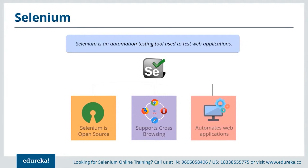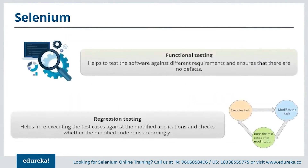Selenium is free of cost. The user does not have to pay for any of the versions of this tool. The latest version available in the market is Selenium 3.1. To get end-to-end guidance on how to set up Selenium on your system, refer to the link in the description of this video. Selenium is highly flexible when it comes to functional and regression testing. Functional testing helps in testing the software against business requirements and ensures there are no defects in the system, while regression testing helps in re-executing the tests against the modified application.